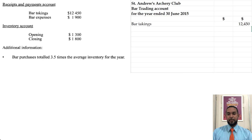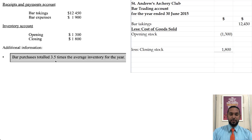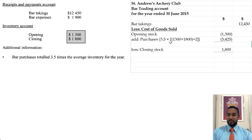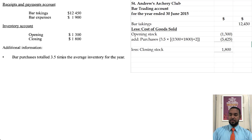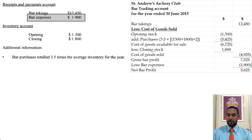We're going to start with bar takings, then minus the cost of goods sold. We need the opening stock, closing stock, and purchases. Bar purchases total 3.5 times the average inventory, giving us 54,250. So 3.5 multiplied by (1,300 + 1,800) ÷ 2 gives us the purchases. That gives a cost of goods available of 67,250. Subtract closing stock to get cost of goods sold, giving a gross bar profit of 75,250. After bar expenses, we get a net bar income of 56,250. Although they asked for a bar trading account, we do it like a bar income statement.